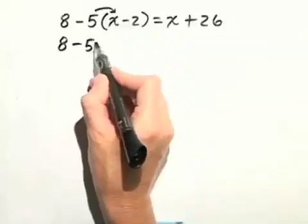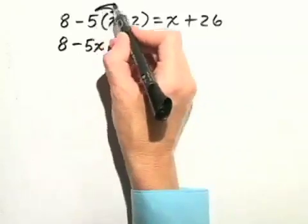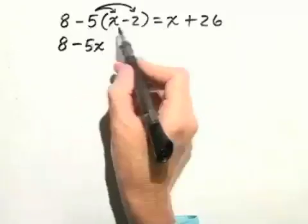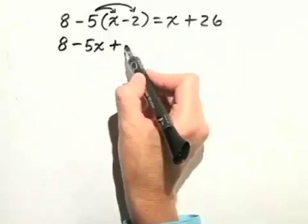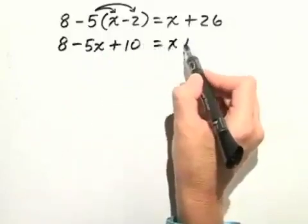And we have negative 5 times x, which is just negative 5x. And then we have negative 5 times negative 2, which will give us positive 10, equals x plus 26.